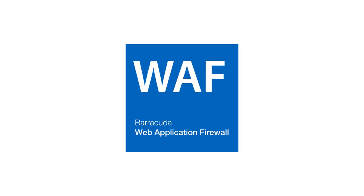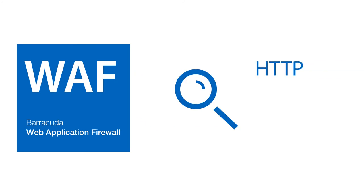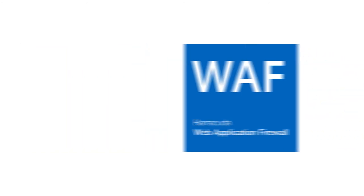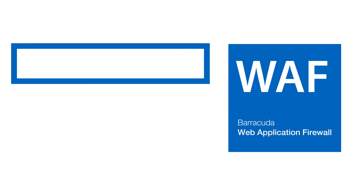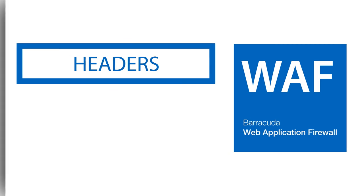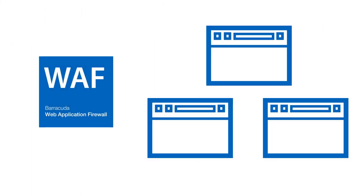This is where the Barracuda Web Application Firewall, or WAF, comes in. It has full visibility and control over HTTP and HTTPS sessions. It enforces a comprehensive security profile on requests that blocks anomalous application usage by inspecting non-conforming values inside URLs, cookies, parameters, headers, and other elements of each and every request to your internal web applications.